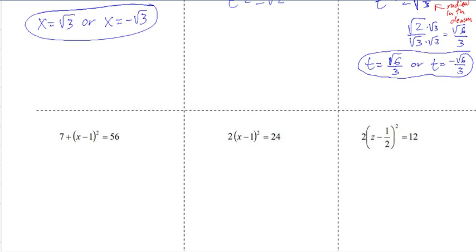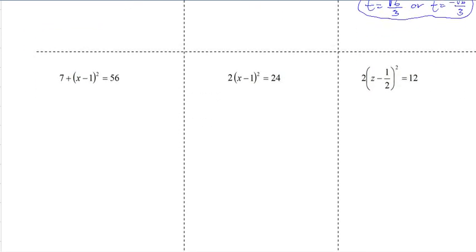But what about parentheses? So let's look at some with parentheses. It's the same thing. This right here is what we're trying to isolate. So if you look around that side, you'll see that there's a 7.